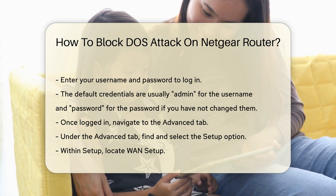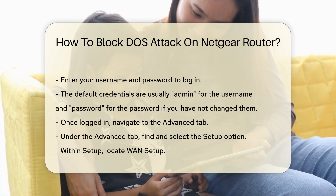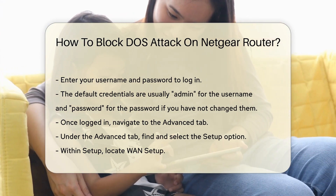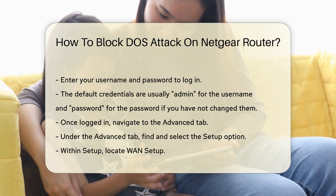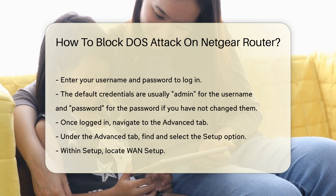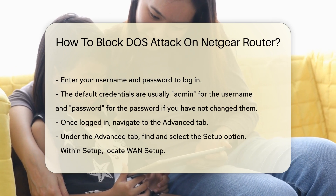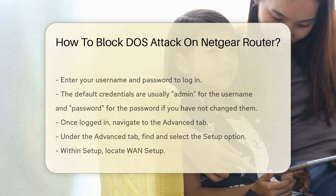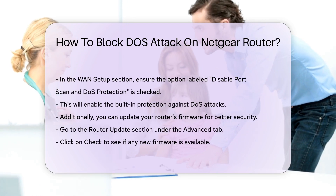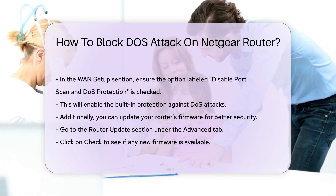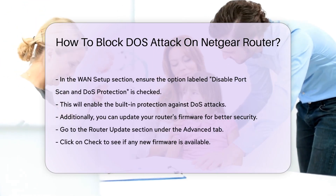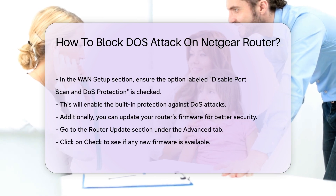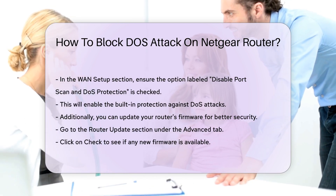Once logged in, navigate to the Advanced tab. Under the Advanced tab, find and select the Setup option. Within Setup, locate WAN Setup. In the WAN Setup section, you will see an option labeled Disable Port Scan and DOS Protection. Ensure this option is checked. This will enable the built-in protection against DOS attacks.